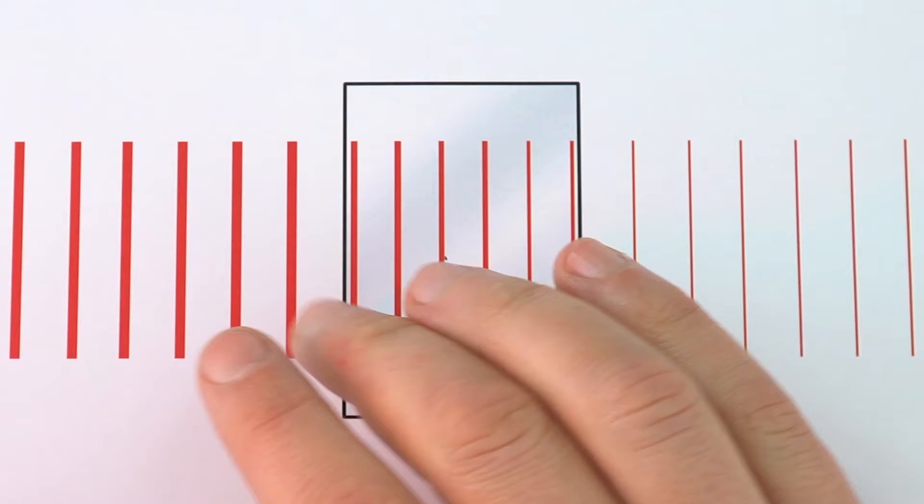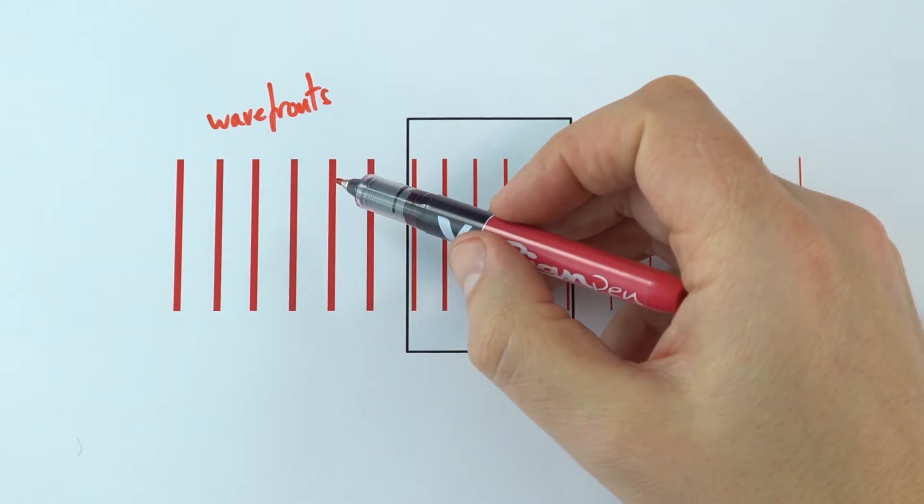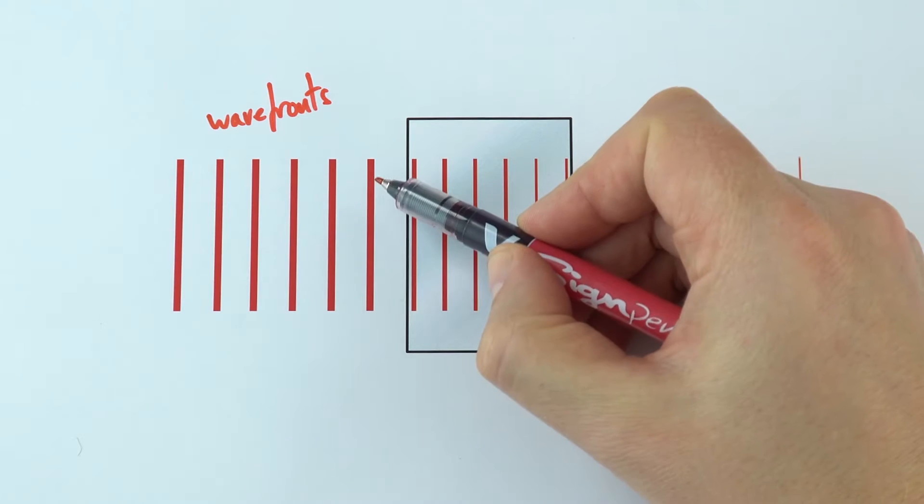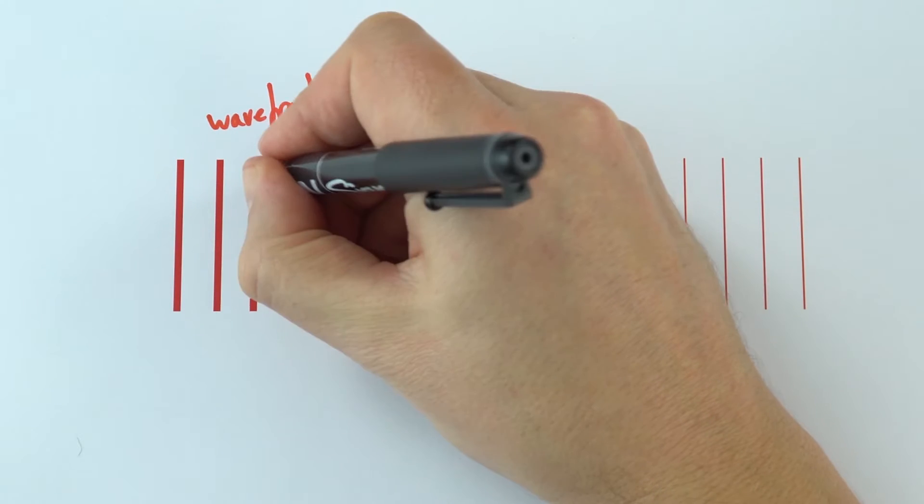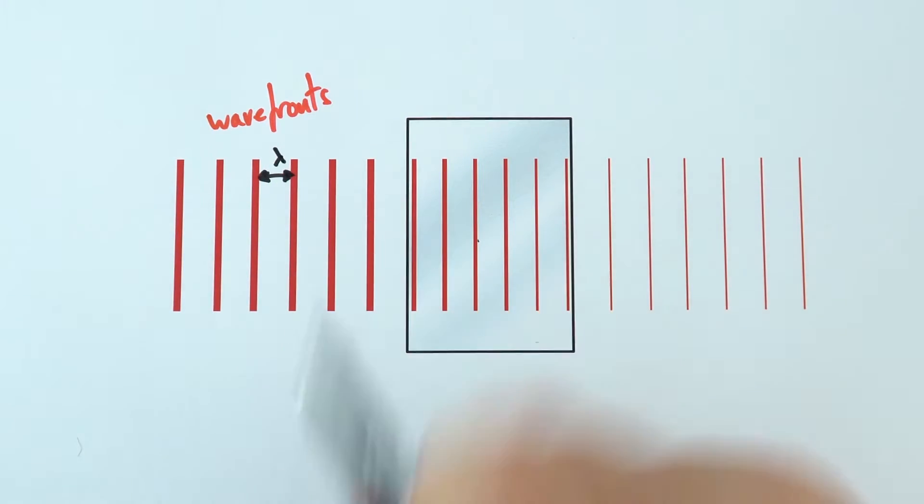Now what we've done on this diagram here is actually we've got a diagram that shows wave fronts. And these are effectively all parts of a wave which are at the same phase. So this might be the top of the wave, that might be the top of the next wave. And that means that the distance between the wave fronts is equal to the wavelength of that wave at this time.